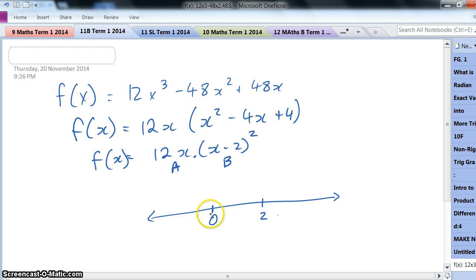So when I am to the left of 0, term A, the 12x, will be negative. Term B, well that's going to be positive everywhere, because I've got (x - 2) being squared. When you square a number, whether it's negative or positive inside the brackets, it's always positive. So it's really only this A part of the expression that we need to worry about.